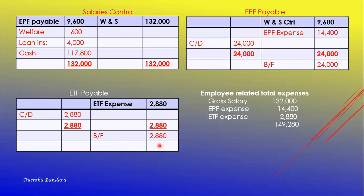The third requirement is employee-related total expenses. That is the addition of gross salary, EPF expense, and ETF expense. Employee-related total expenses means the amount to put under administration expenses, because these are expenses related to employees. The answer is 149,280.